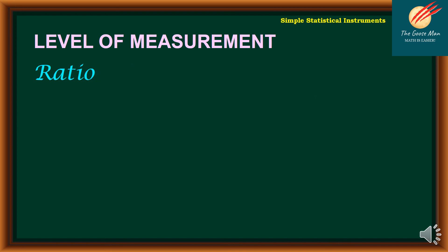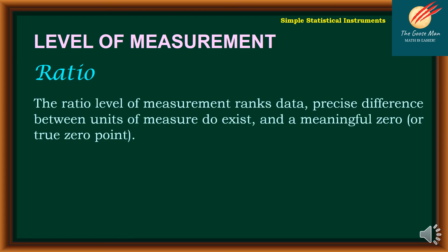What type of level of measurement is what we call ratio? The ratio level of measurements ranks data. Precise difference between units of measures do exist and meaningful zero or true zero point. Our examples are distance. Another one is the salary. Perhaps my salary is 10 times a third salary or I don't have salary at all. And another example is age. That is the level of measurement.